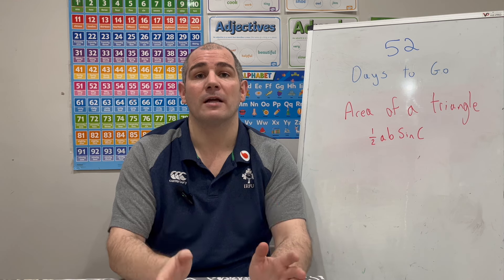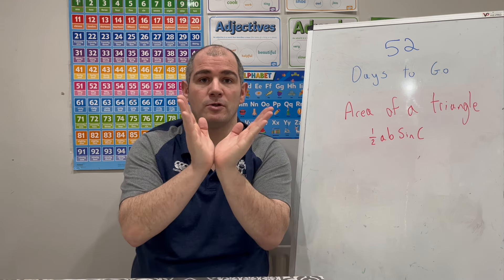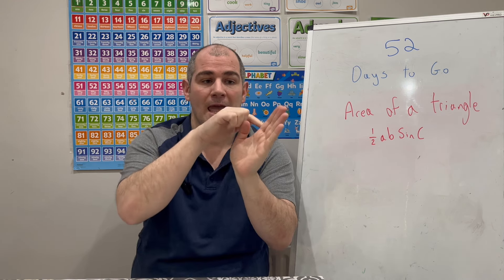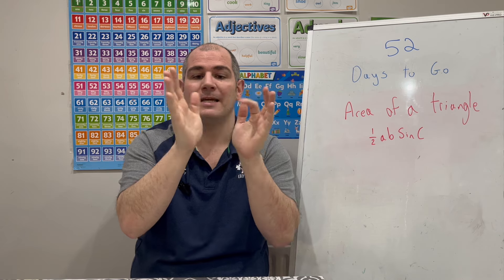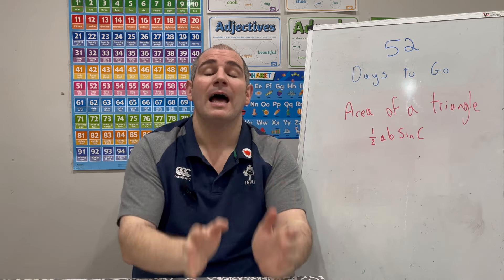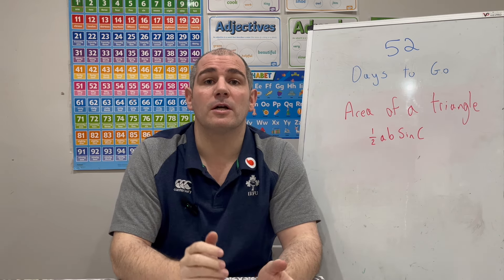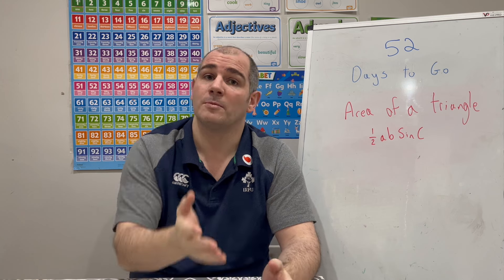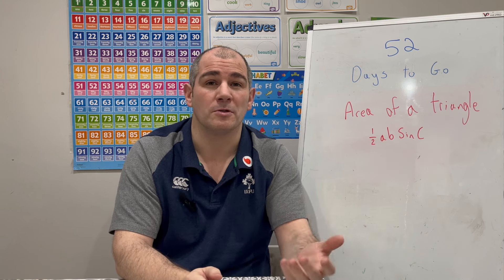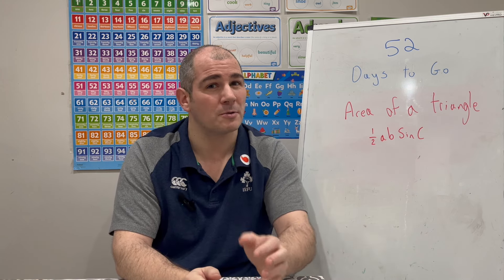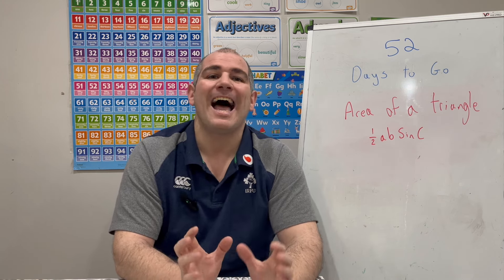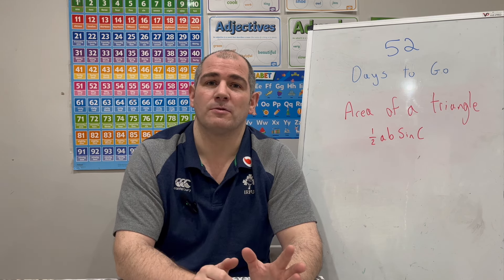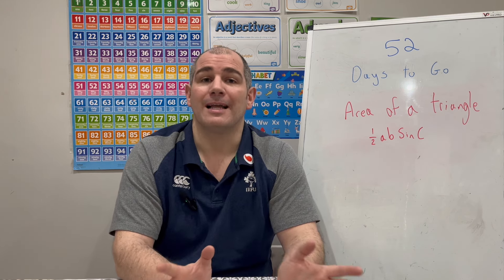You can find the area of any triangle as long as you've got two sides and the angle in between them, because you can do a half times A times B times the sine of the angle in between them. In this video we're going to look at how to do that, we're going to look at some questions — there'll be some for you to try as well, so remember to pause the video and try those questions. At the end of the video I'll talk about the practice questions too. So let's get started.